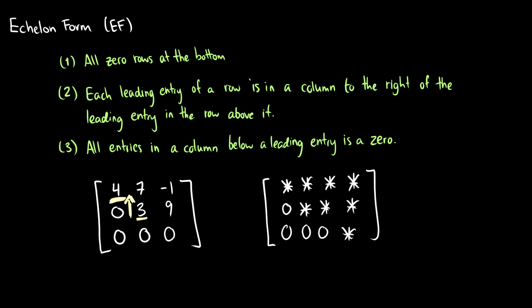The third condition says that all entries in a column below a leading entry is a zero. This follows from number two. If we have a leading entry up here which is 4, we're not going to have any non-zero numbers below it. So this is echelon form.